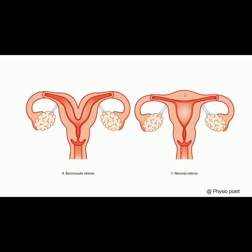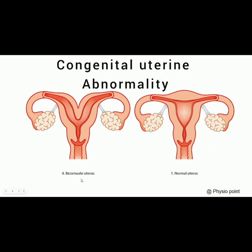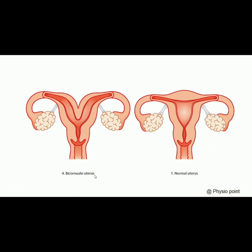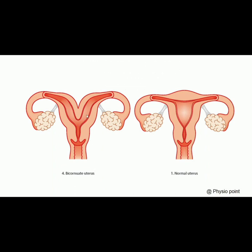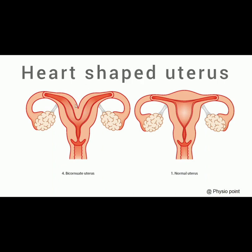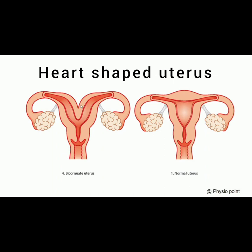But why does bicornuate uterus occur? It is a congenital uterine abnormality — a congenital uterine malformation — caused by a Mullerian duct anomaly. Congenitally, there must be a fusion of the Mullerian duct. But whenever there is an impairment in that fusion, it fails to fuse completely, resulting in only a partial fusion, which causes an indentation at the level of the fundus of the uterus, making the uterus look heart-shaped. That is called the bicornuate uterus.